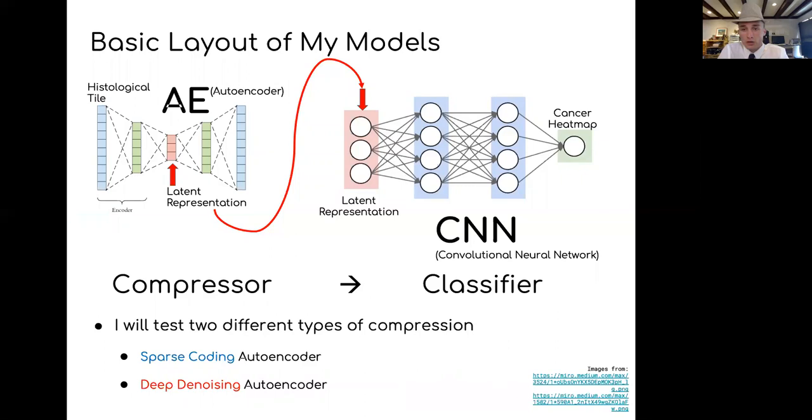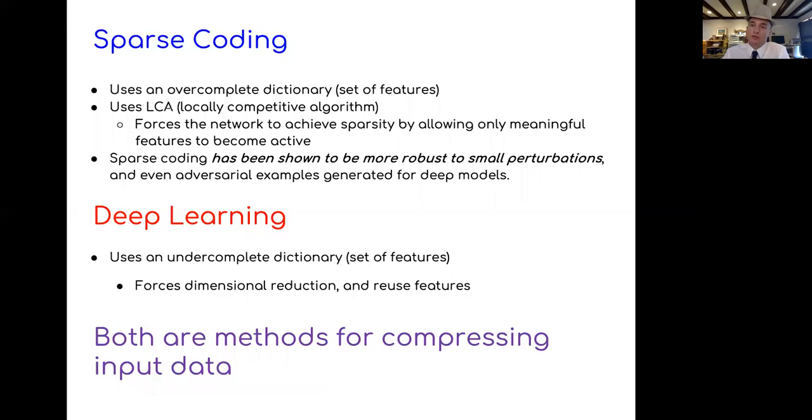Here's the basic setup of my models. First I have a compressor which is usually an autoencoder neural network, then I run the compressed version of the image. So the image goes in, gets compressed, I run that into a classifier, a convolutional neural network I made myself, and that is turned into a cancer heat map. The only thing I'm going to change is the compressor type - either sparse coding autoencoder or deep denoising autoencoder.